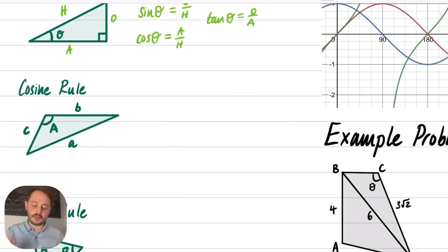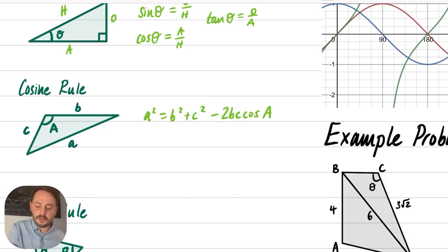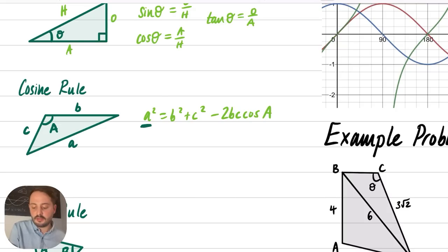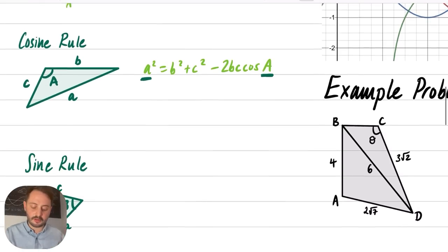The cosine rule states that a² = b² + c² − 2bc cos A. It looks like Pythagoras with an extra term. The key thing is that the side 'a' is always opposite the angle 'A' — capital letter for the angle, lowercase for the opposite side. This can be used to find missing angles or missing sides, and we'll see an example with that later on.